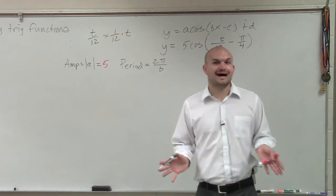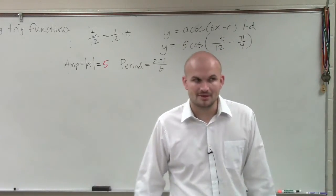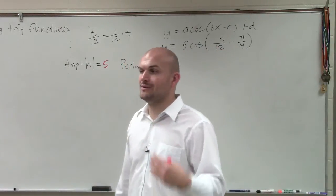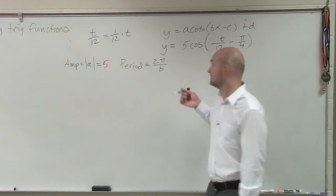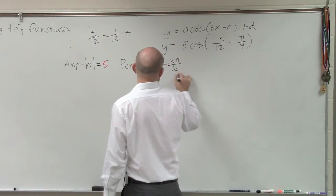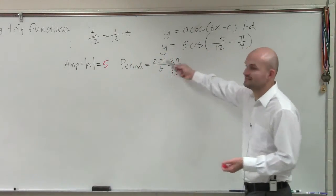But more often than not, the problems are going to be written as t divided by 12. So you guys are going to have to understand that we're going to want to rewrite it as t times 1/12 to understand that that's our b. So therefore, it's 2π over 1/12.